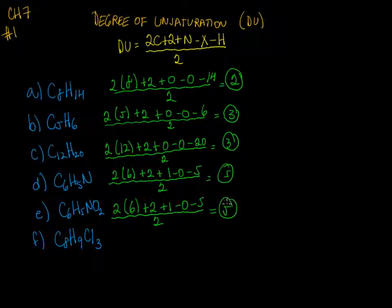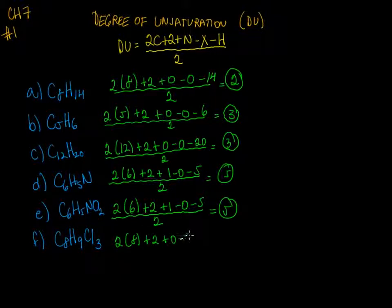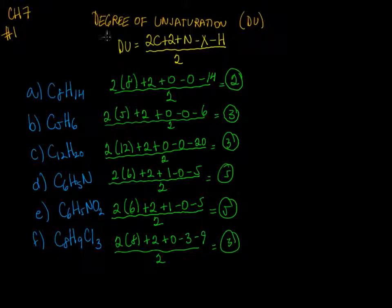Here I get a whole number of five. For this one, we have eight carbons, add two, zero nitrogens, three halogens, nine hydrogens, divide by two, and we get a whole number of three.